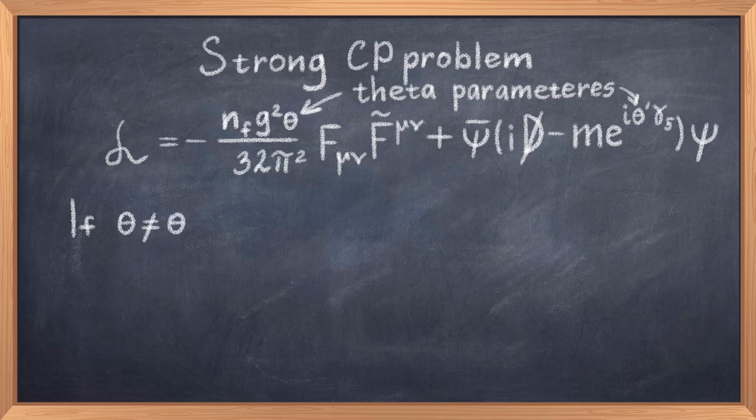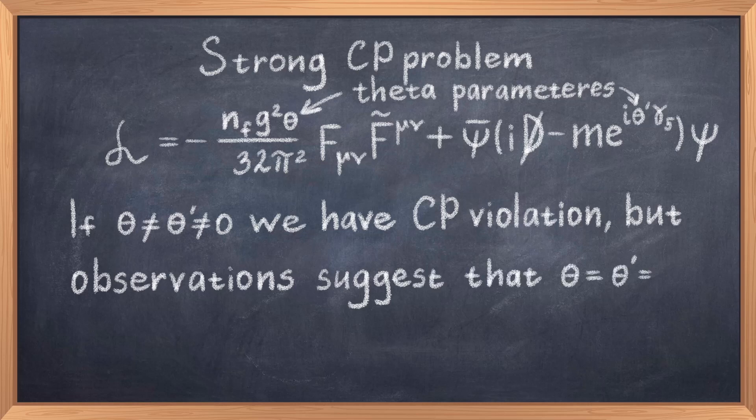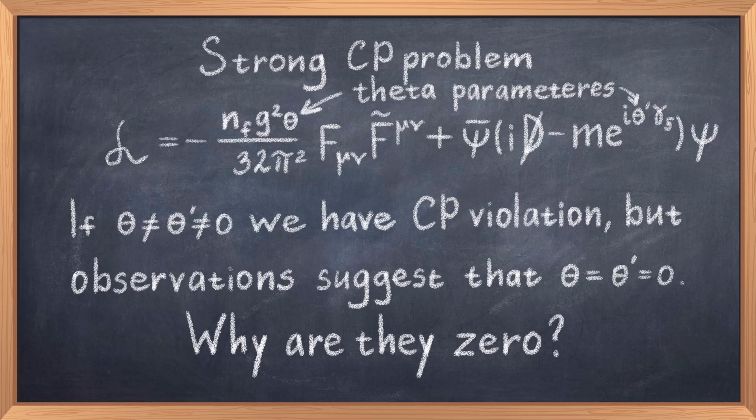The important part here is the angles theta and theta prime. If the parameters are zero, then everything is fine and everything works like in QCD. If they're not zero, they should lead to CP violation, thus the strong force would not obey CP symmetry. And the strong force would also lead to matter and antimatter asymmetry. The problem is that experiments strongly suggest that theta and theta prime are zero or at least approximately zero. This leads to the question, why should these values be zero such that these values disappear? That is the CP problem.